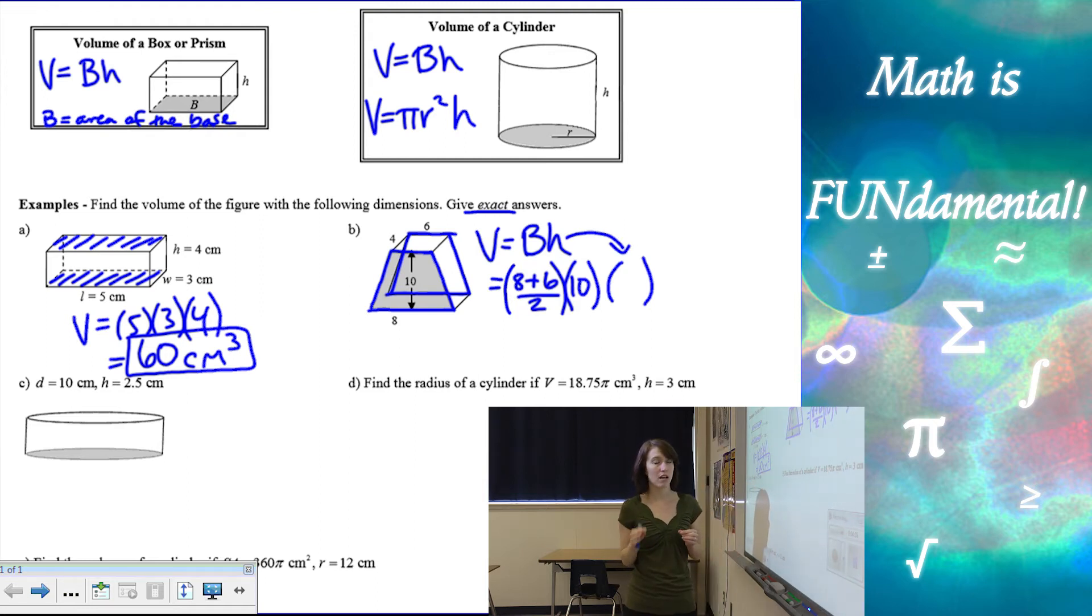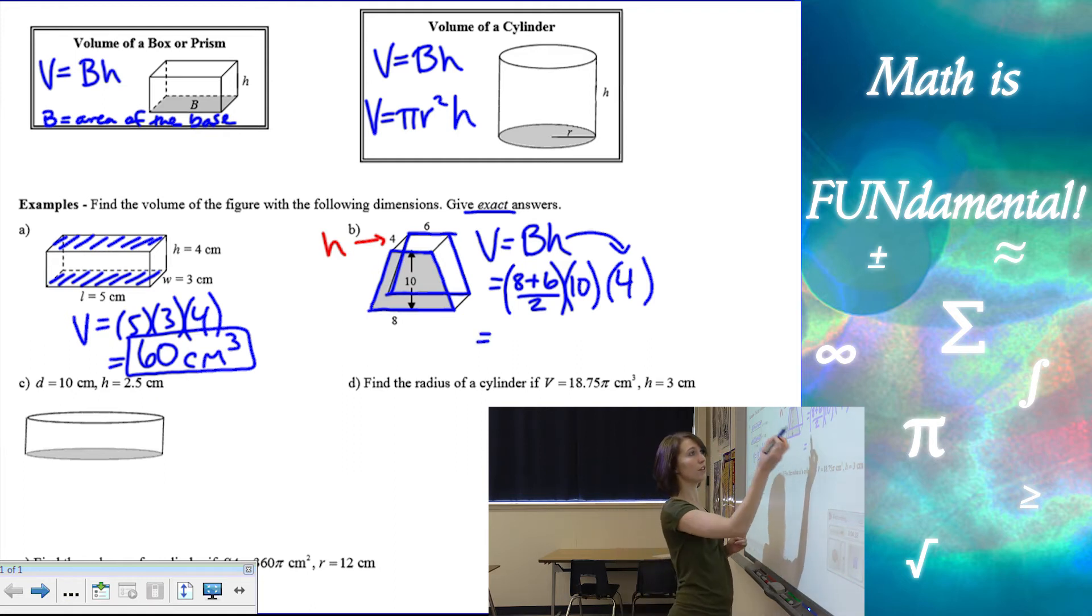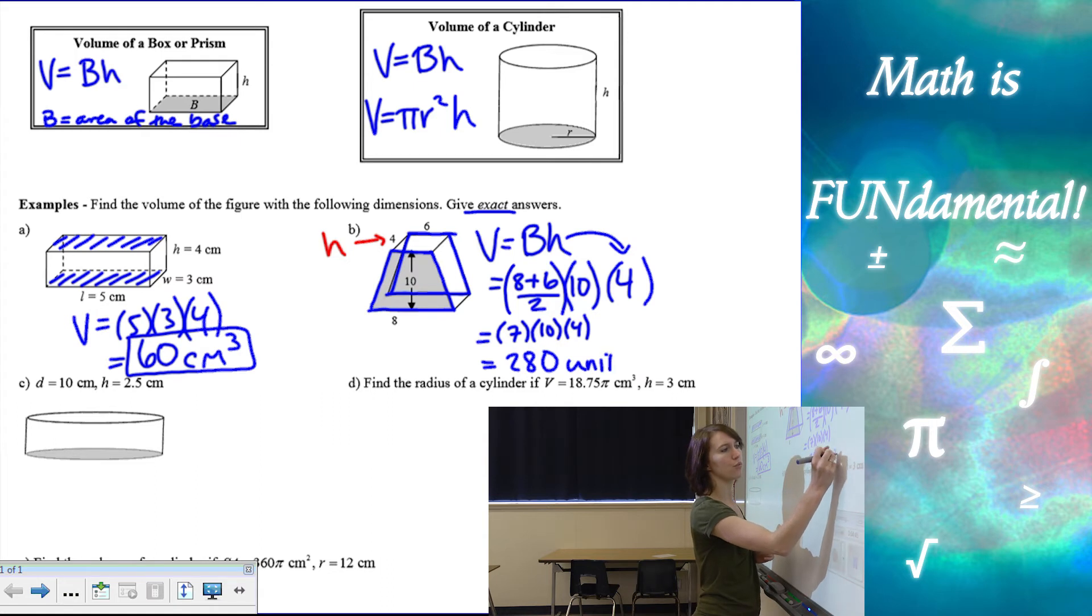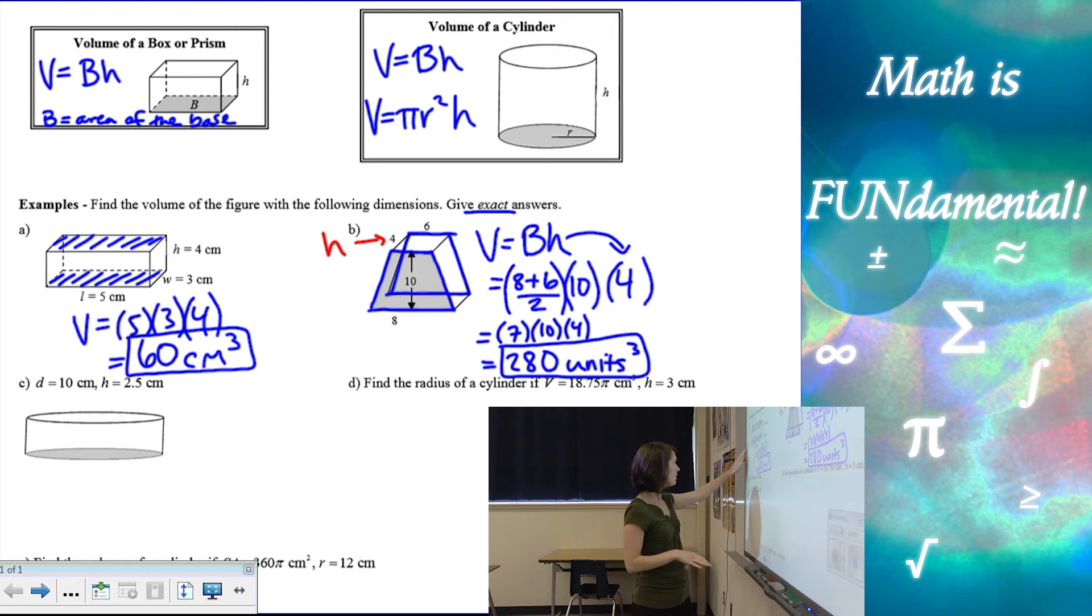Now we want to multiply that times the height of the prism. And now this is where it gets a little tricky. A lot of students want to use 10 as the height because that's how tall it is when it's standing as shown. But the height of a prism is the length between the two bases. So if the trapezoids are the bases, then four is going to be our height of the prism. It's the length between the two bases. And that's probably the trickiest part of these types of problems. So we've got 14 divided by two is seven times 10 times four is 280. And I wasn't given any units. So in this case, I would just use the word units and do units cubed because they didn't specify what units they wanted me to use.